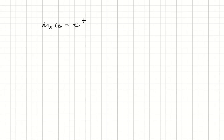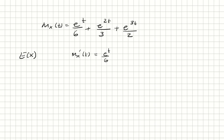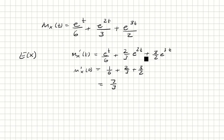The random variable x has moment generating function m(t) equal to e^t over 6, plus e^(2t) over 3, plus e^(3t) over 2. The first thing we need to find is the expected value of x. For that we take the derivative of m(t), which is e^t over 6 plus 2/3 e^(2t) plus 3/2 e^(3t), and evaluate at t=0. We get 1/6 plus 2/3 plus 3/2, which equals 7/3. So that's the expected value.